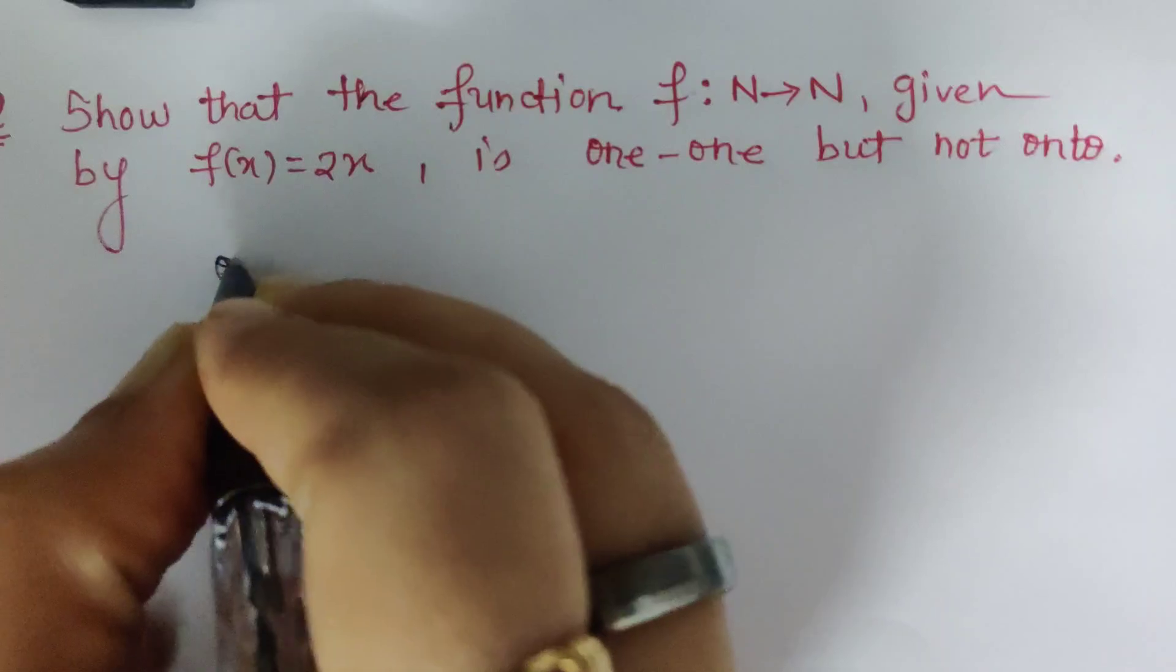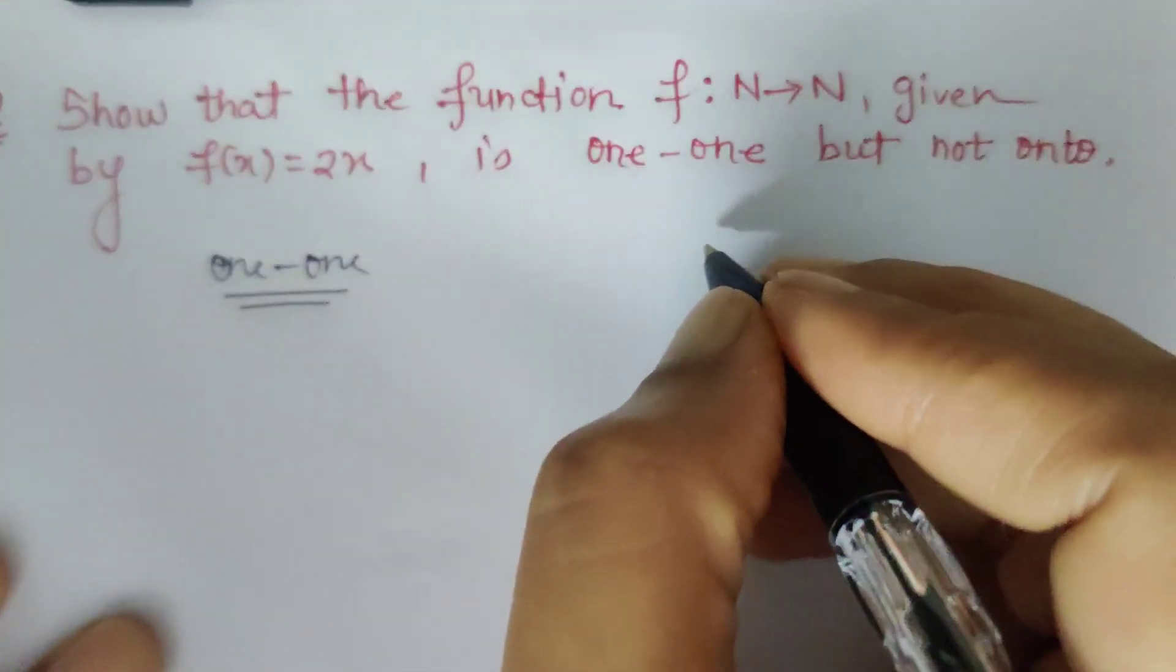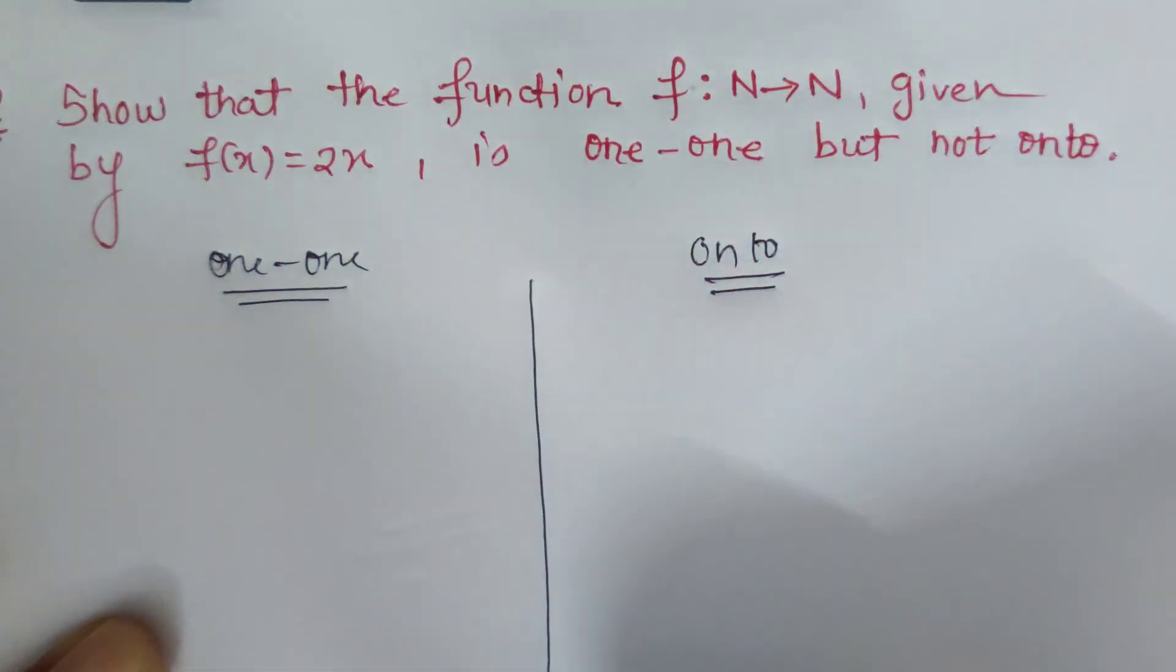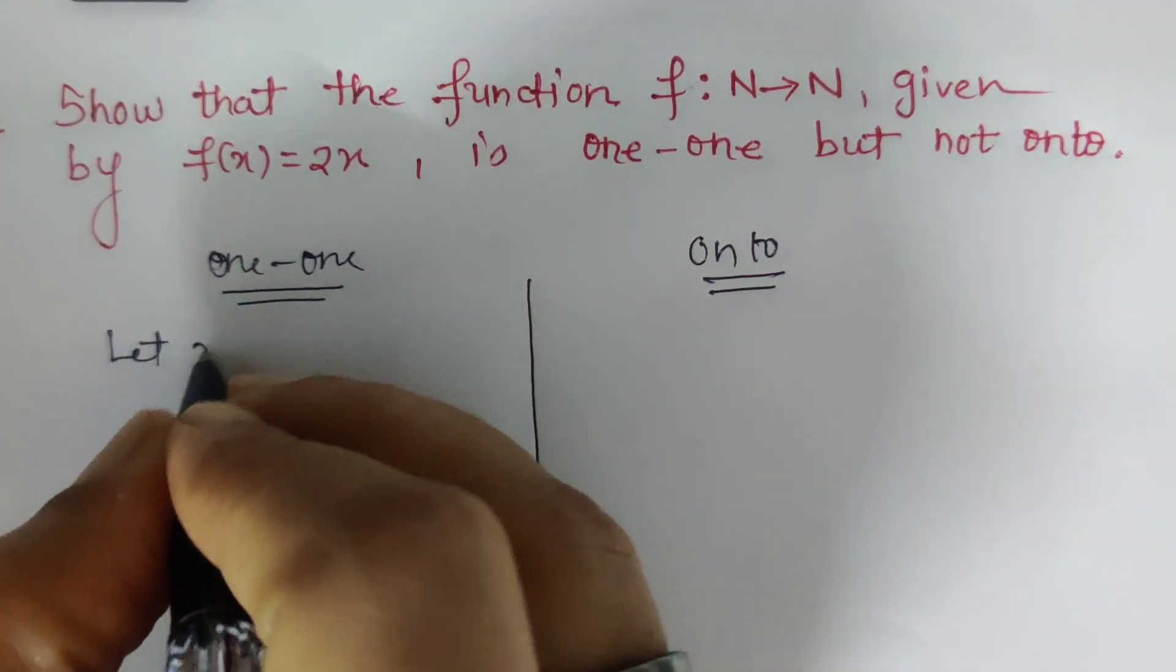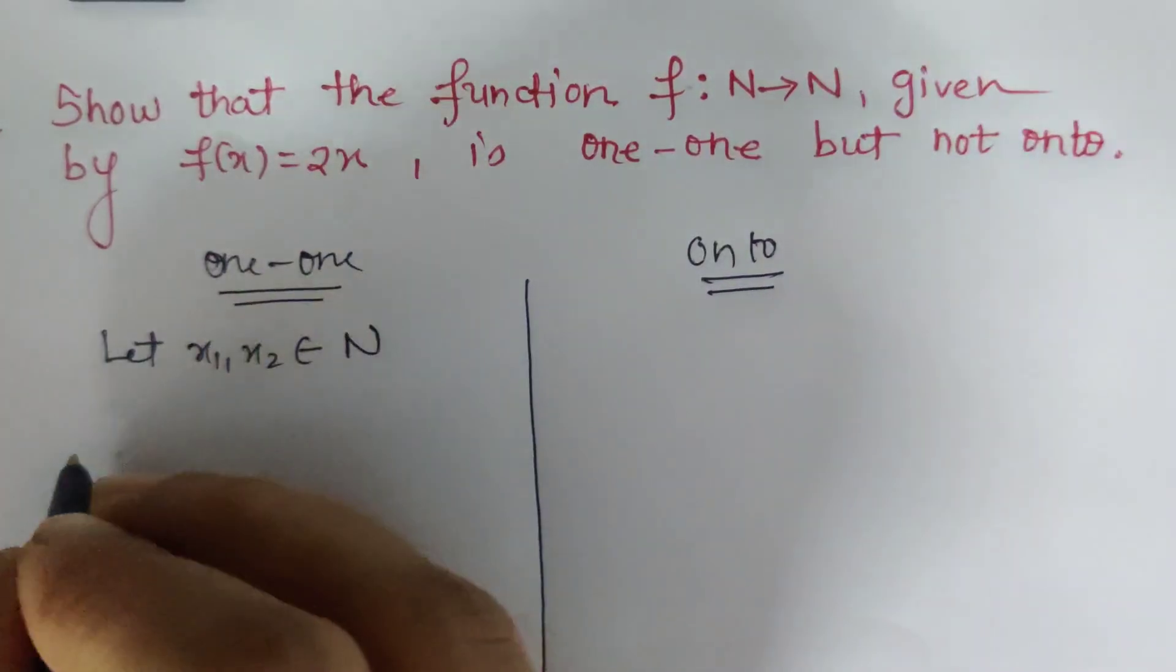For one-one and for onto, how simple the steps are I'll show you. For one-one, we have to consider two elements in domain: let x1, x2 belong to N such that fx1 is equal to fx2.